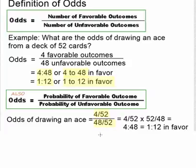So we get 4/52 divided by 48/52. To divide by that bottom fraction, we invert 48/52 and multiply by 52/48. So we have 4/52 times 52/48. The two factors of 52 cancel, and we end up with 4 to 48 as our ratio, which again simplifies to 1 to 12 in favor.